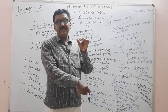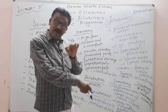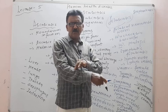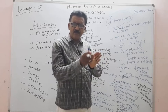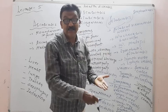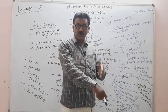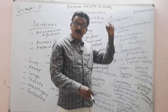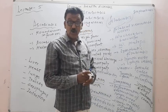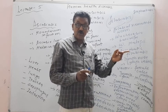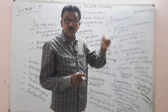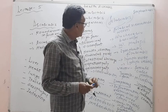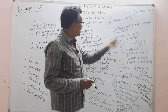After copulation of male and female worms in the human body's lymphatic system, microfilaria enter the blood vessels. These microfilaria are taken up by the Culex mosquito, completing the first, second, and third larval stages within the mosquito.